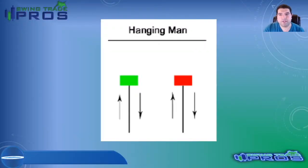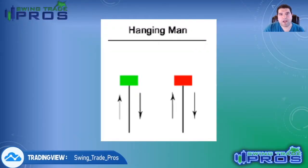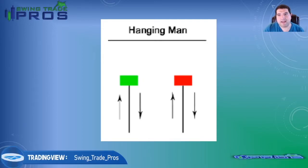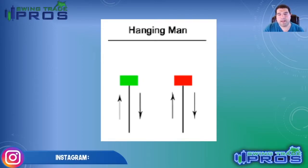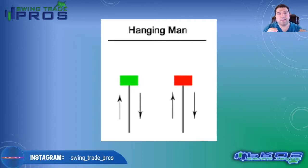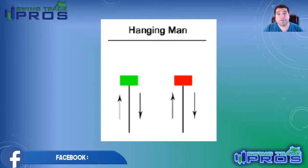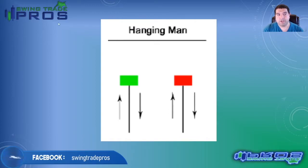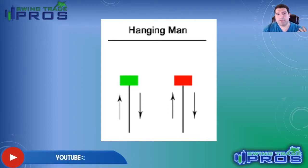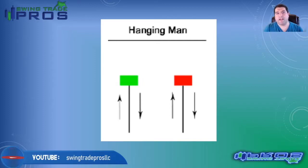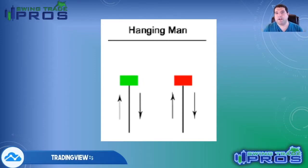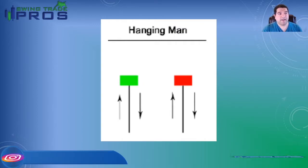The first candlestick pattern we're going to identify is the hanging man. Typically these form at the tops or bottoms of patterns. Just before we get to the charts, I'm going to go through all the different candlestick patterns we're going to be covering in this video. First is the hanging man.